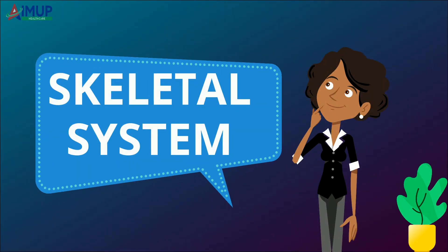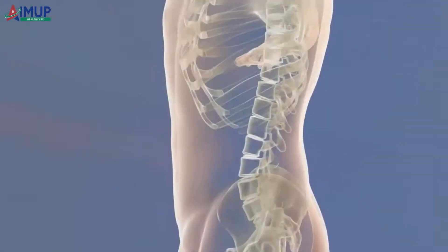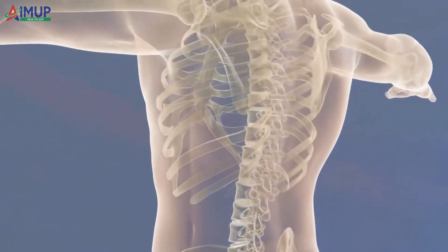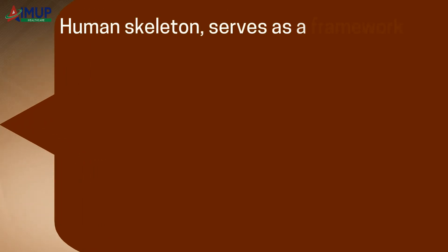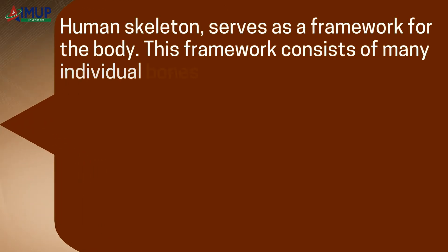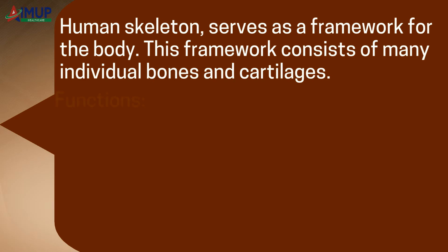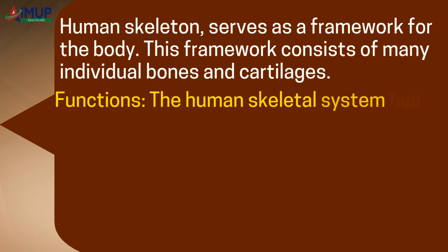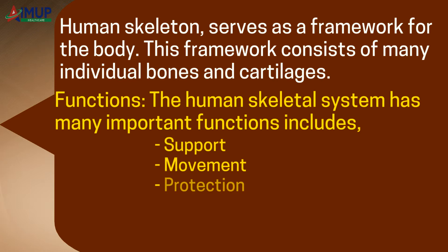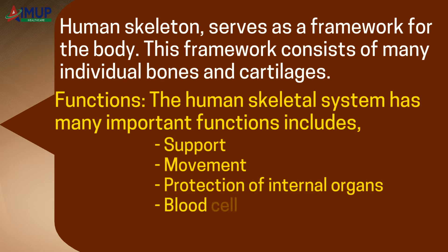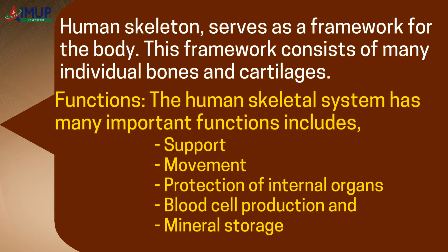What is the skeletal system? The human skeleton serves as a framework for the body. This framework consists of many individual bones and cartilages. The human skeletal system has many important functions, including support, movement, protection of internal organs, blood cell production, and mineral storage.